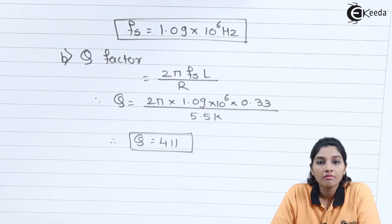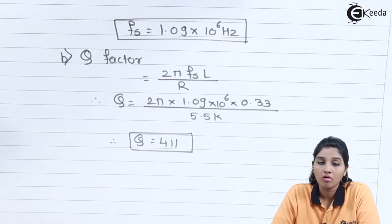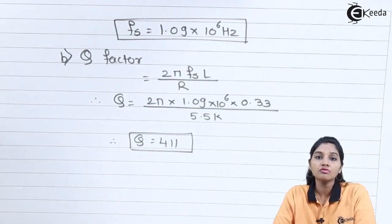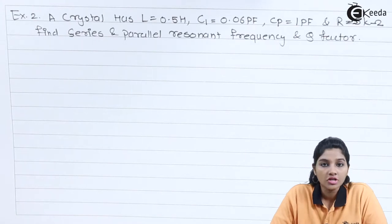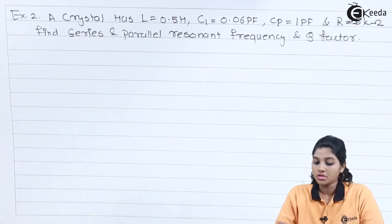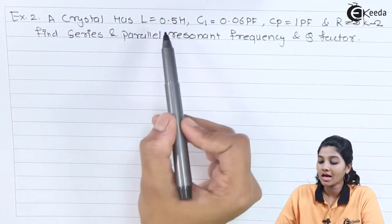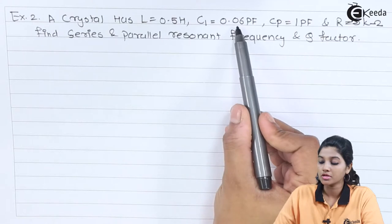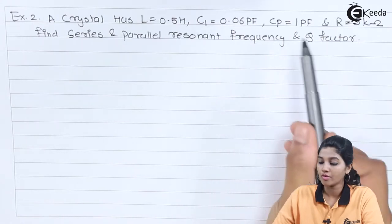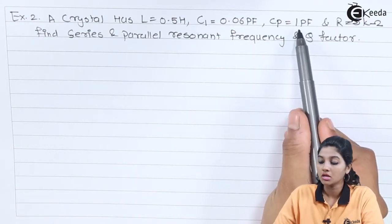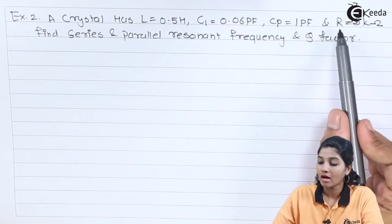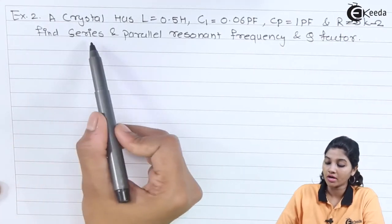So this is how we can find out the resonant frequency and quality factor of the crystal oscillator. Now let's move to the next problem. The statement of the second problem is: a crystal has L equals 0.5 Henry, C1 equals 0.06 pF, Cp equals 1 pF, and R equals 5 kΩ.